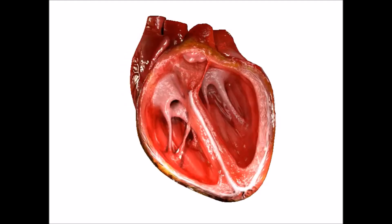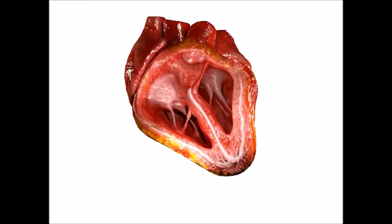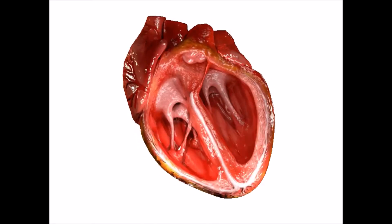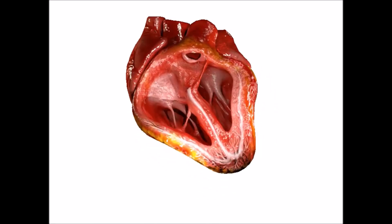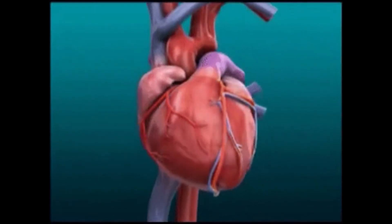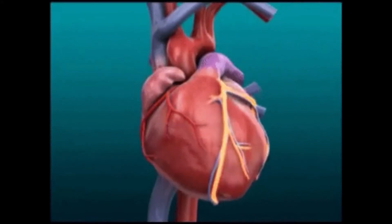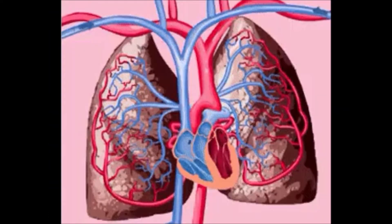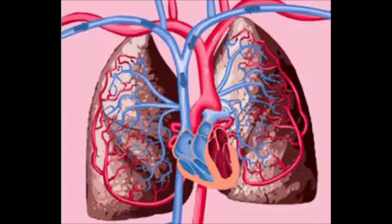The human heart is a hollow muscular organ, roughly triangular or conical in shape. Its average weight is 300 grams in males and 250 grams in females — the same size as our clenched fist. It is made up of cardiac muscles, reddish-brown in color, situated between the two lungs in the middle of the thoracic cavity resting over the diaphragm. It is covered by a tough, fluid-filled two-layered membranous sac called the pericardium, which reduces friction between the heart wall and surrounding tissues.